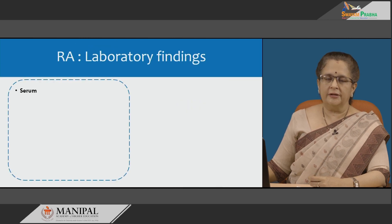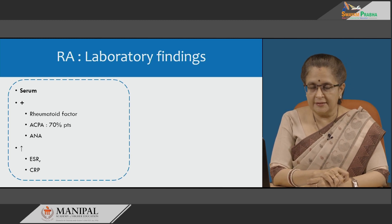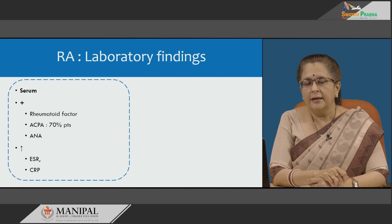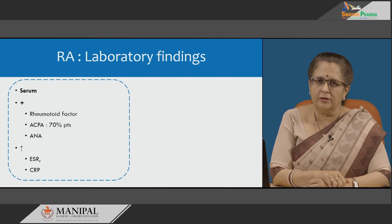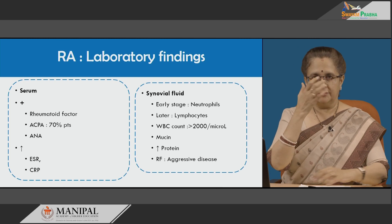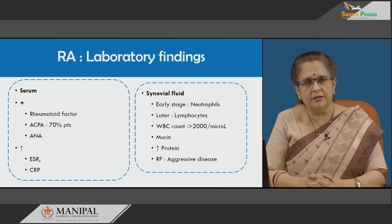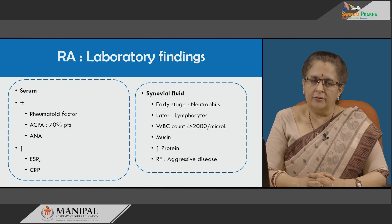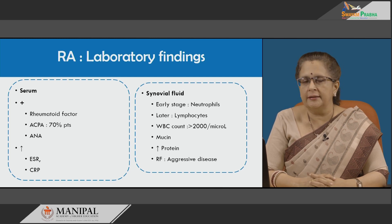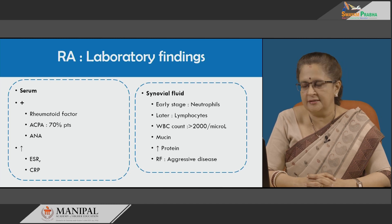Laboratory findings in rheumatoid arthritis: serum shows positivity for rheumatoid factor, ACPAs in 70 percent of patients, and ANAs. There is also an increase in ESR and C-reactive protein. Synovial fluid analysis shows predominantly neutrophils in early stages and lymphocytes in later stages. WBC count is characteristically more than 2000 per microliter. Mucin and increased protein are also seen. Rheumatoid factor in synovial fluid, when present, is usually a sign of aggressive disorder.